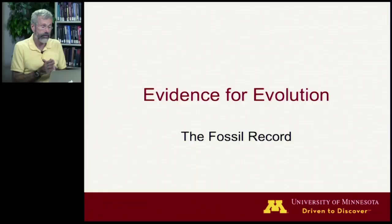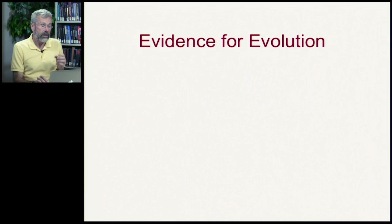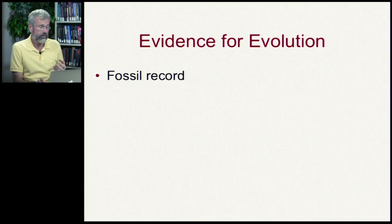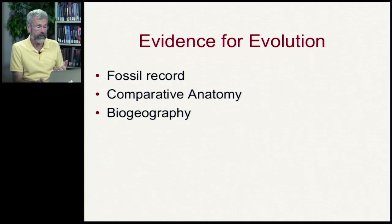For the first few lectures, we've taken the evolutionary process for granted — that this is just how things are. So let's stop for a moment and look at the actual evidence we have for evolution. We'll look at several different kinds of evidence: first, the fossil record; second, comparative anatomy; third, biogeography; and fourth, molecular genetics.